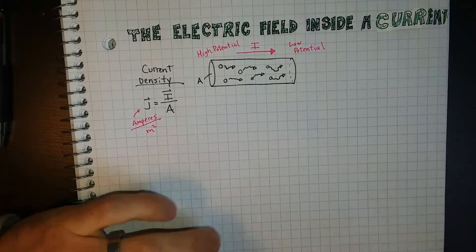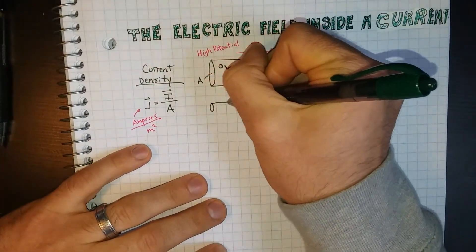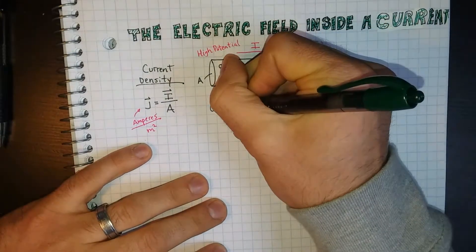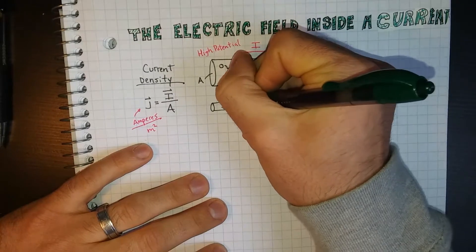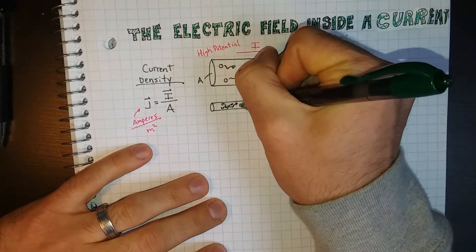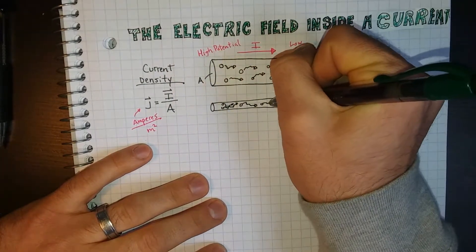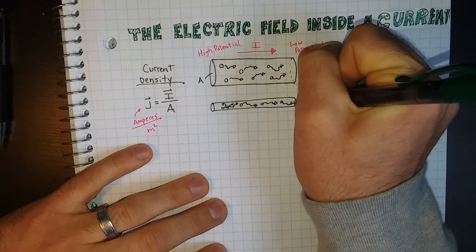And if I had a similar wire, just with the same current, but a lot smaller area, you would say that this one has more current density in it. So these charges would have a much harder time flowing from place to place.